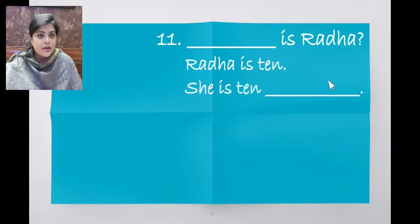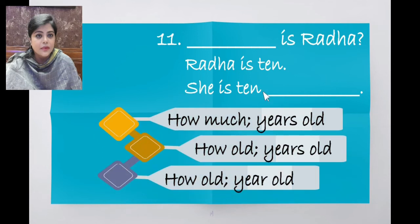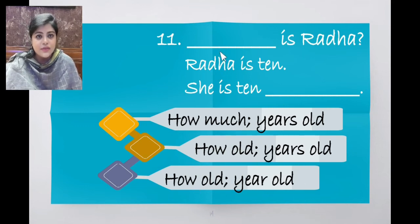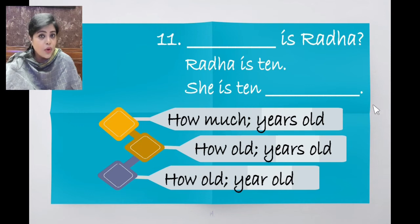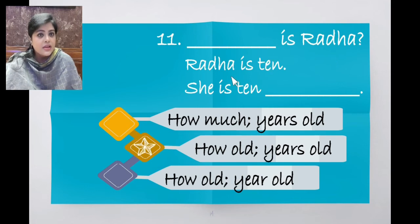Dash is Radha? Radha is 10. She is 10 dash. Options: how much years old, how old — years old, how old — year old. We are talking about age, so we use how old. She is 10 years old, not year old. The correct answer is: How old is Radha? She is 10 years old.